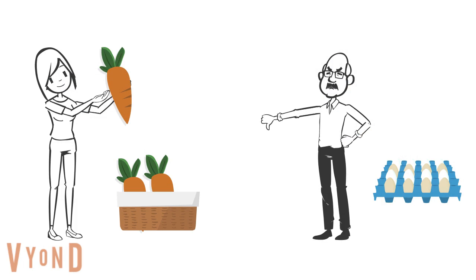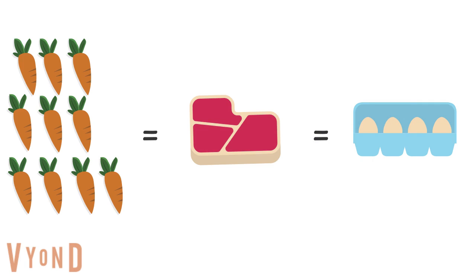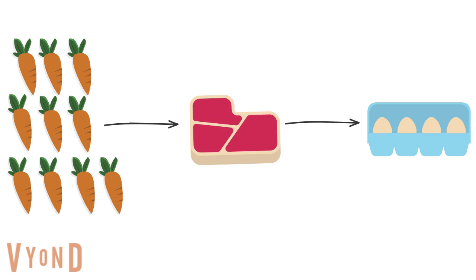For example, if Mary wanted eggs, but Sam the Eggman doesn't like carrots, how can Mary get the eggs? Mary only has carrots to swap, so she might need to swap the carrots for Mike's steak and then give the steak to Sam the Eggman in exchange for some eggs. This is very complicated.